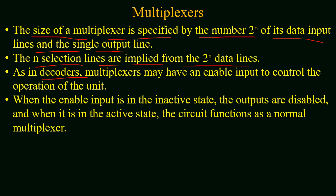As in the case of decoders, a multiplexer may have an enable input to control the operation of the unit. Whenever the enable input is in an inactive state the outputs are disabled, and when it is active the circuit functions as a normal multiplexer.